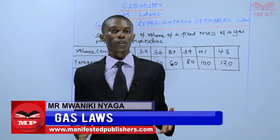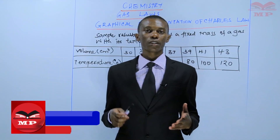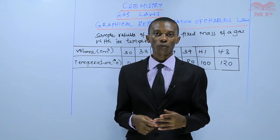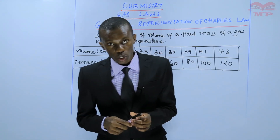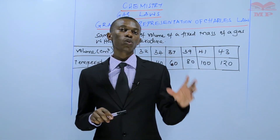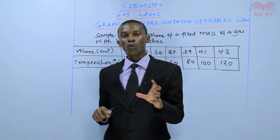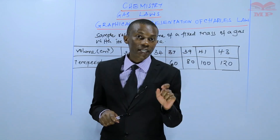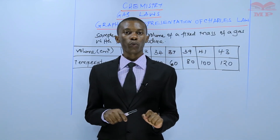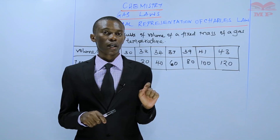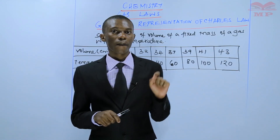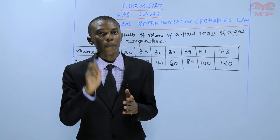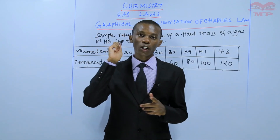In the previous lesson, we discussed the definition of Charles' Law and a simple illustration of Charles' Law. Charles' Law states that the volume of a fixed mass of a gas is directly proportional to its absolute temperature at constant pressure. Remember, we said that absolute temperature must be there for it to be correct.